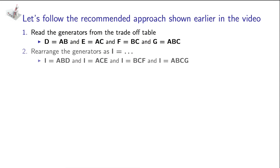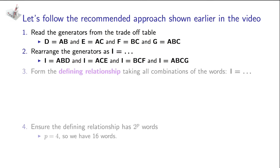Our four generators are rearranged over here. I equals ABD, I equals ACE, and so on. How many words in our defining relationship? 2 to the power of P, and with P equals 4 in this case, that equals 16 words. That's a lot of words to figure out.